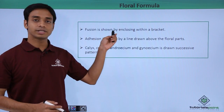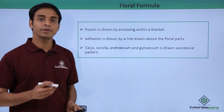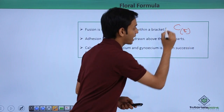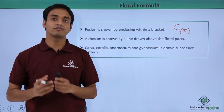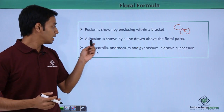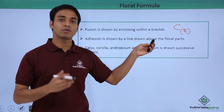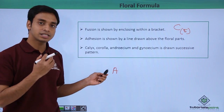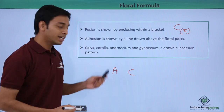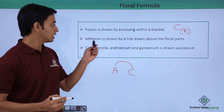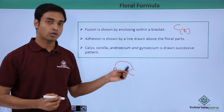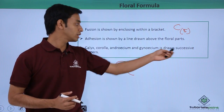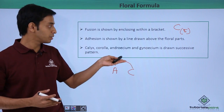Fusion is represented by enclosing parts within brackets. For example, if there are five petals and all are fused, corolla is written with five enclosed in brackets. Adnation — when stamens are fused with the corolla — is shown by a line drawn above the floral parts. The floral formula is written in a successive pattern: calyx, then corolla, then androecium, followed by the gynoecium.